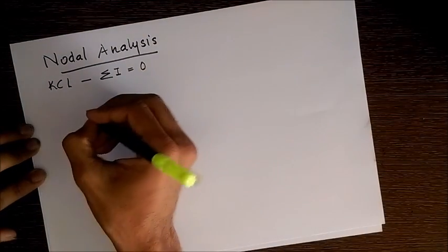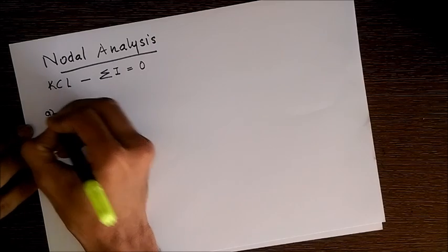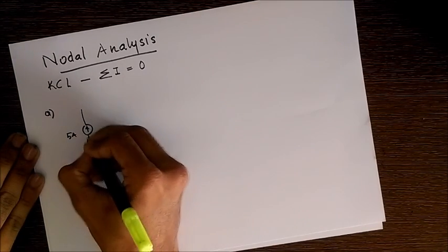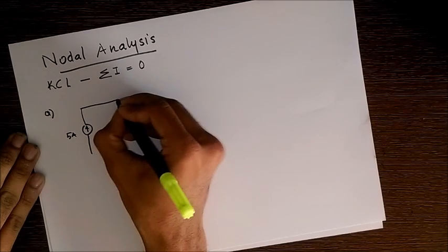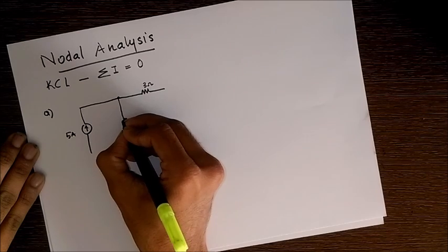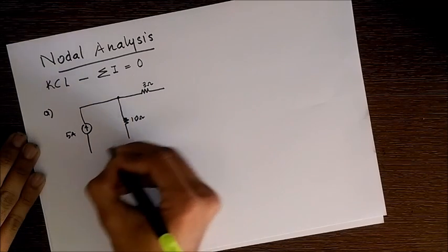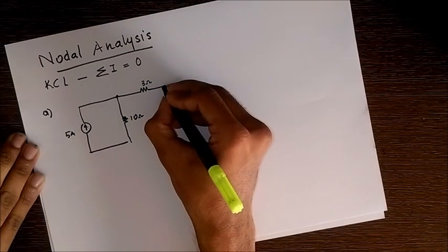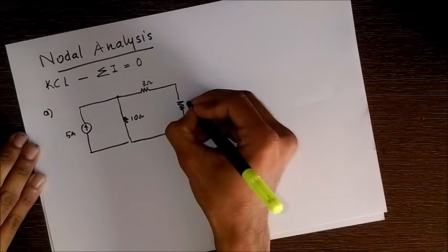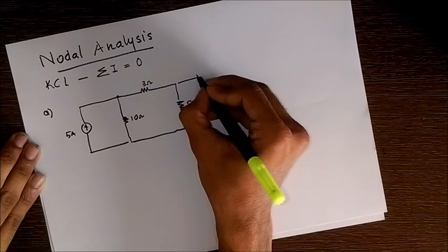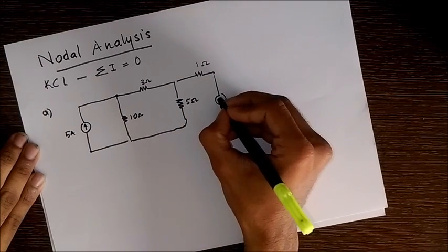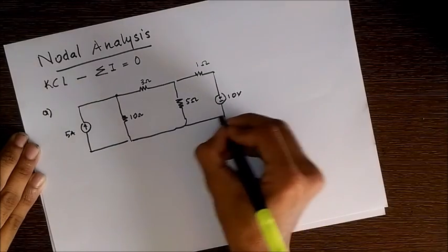Let's understand nodal analysis with a problem. I'm taking a current source of 5 Amp, a 3 ohm resistor, 10 ohm resistor, 5 ohm resistor, 1 ohm resistor, and a 10 volt battery. So this is our circuit.